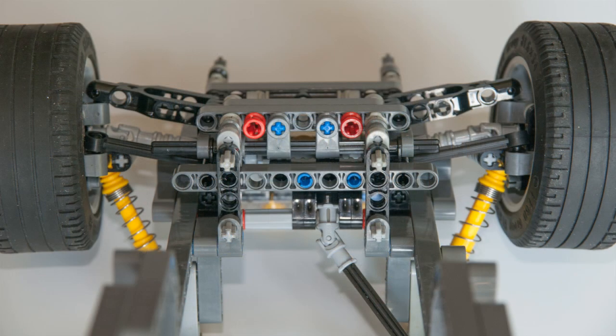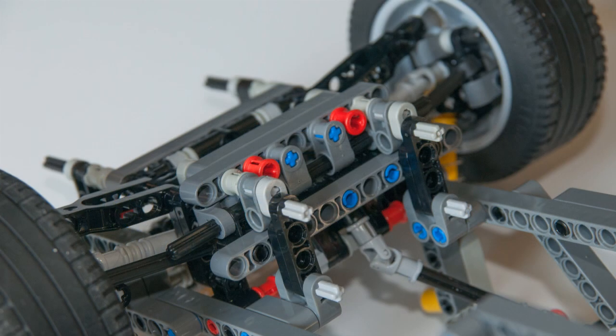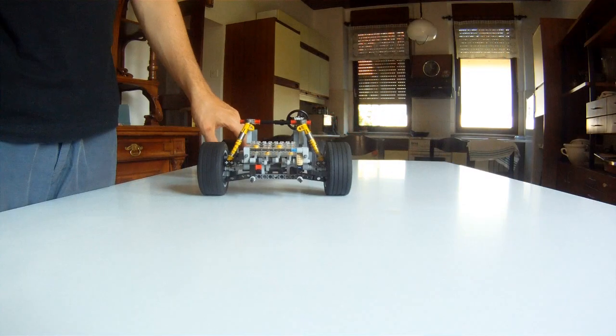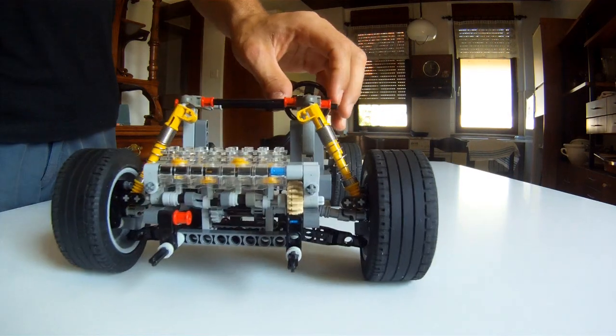And as I mentioned before, because there is no upper wishbone and the springs, or struts as they are called here, take over the role of the wishbone, it leaves more room between the wheels for engines and other stuff.